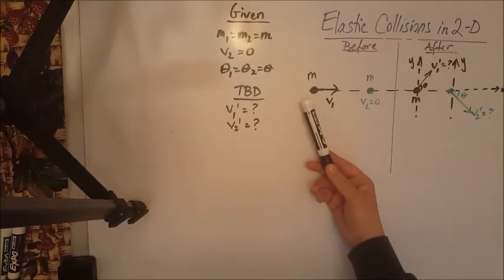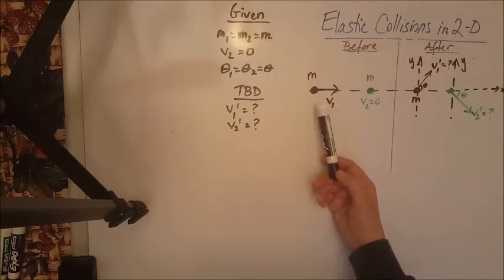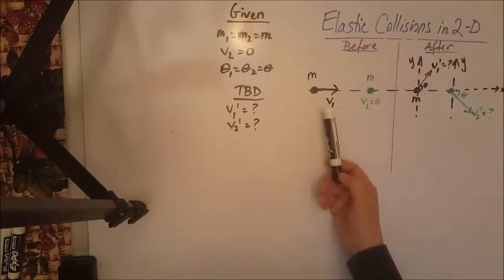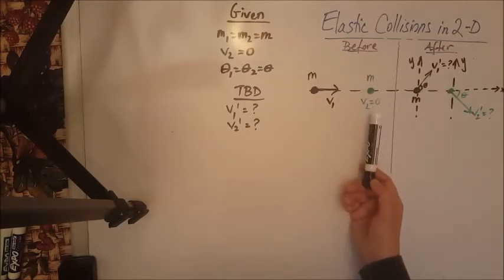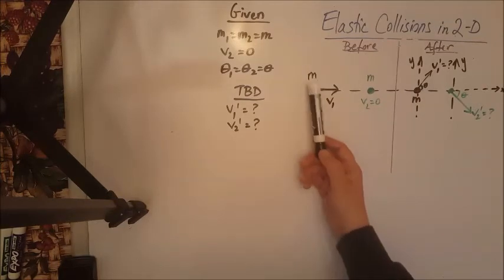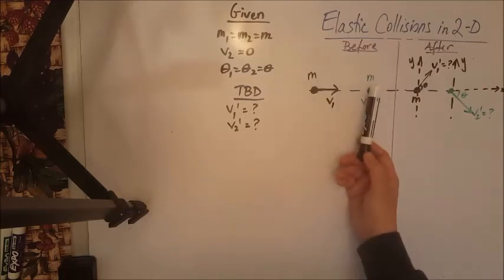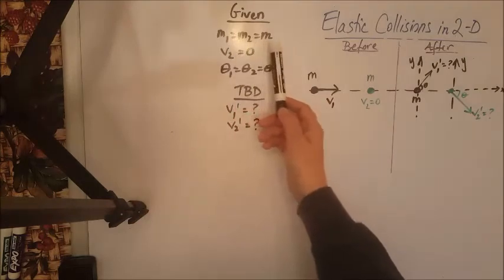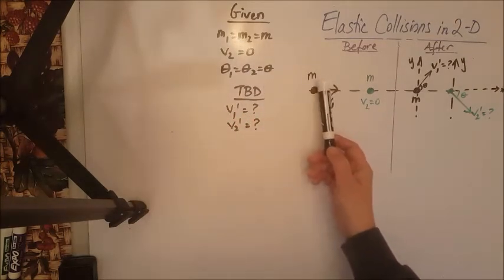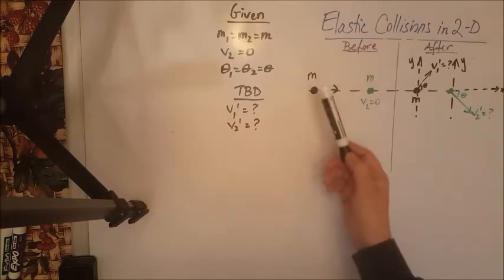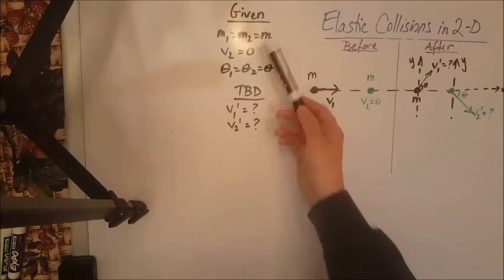So we have object M1 moving to the right on the x-axis with velocity V1 and object M2 at rest to begin with. The masses M1 and M2 are the same, so part of the given is that M1 equals M2 equals M. Rather than putting the indices M1 and M2, we are just going to use M since they are the same.